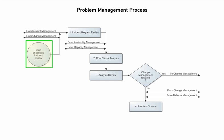The problem management process usually begins with an incident request review, which the problem coordinator performs at regularly scheduled intervals. During the review, the problem coordinator analyzes incident request information to identify problems with the services they are responsible for. If the coordinator finds an incident request for which a problem investigation already exists, they relate that incident request to the existing problem investigation. When a new problem is identified, the problem coordinator creates a problem investigation and relates it to the corresponding incident requests, then assigns the investigation to a specialist with the appropriate combination of skills, availability, and access rights to perform a root cause analysis.